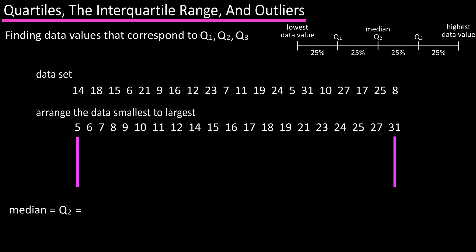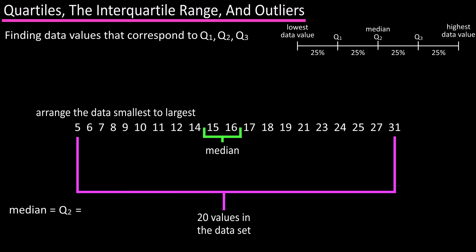Since we have an even number of values in the data set, 20, the median will be between the two middle values, value number 10 and value number 11, which are 15 and 16. Add them together and divide by 2 and we get 15.5 as the median, which is Q2.